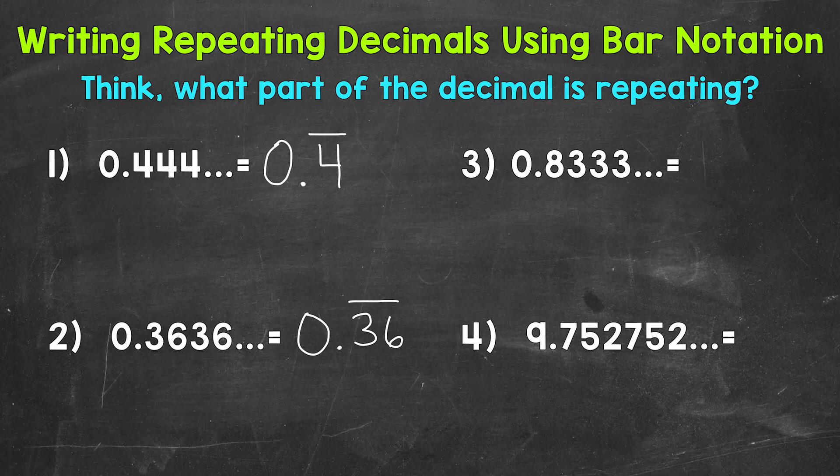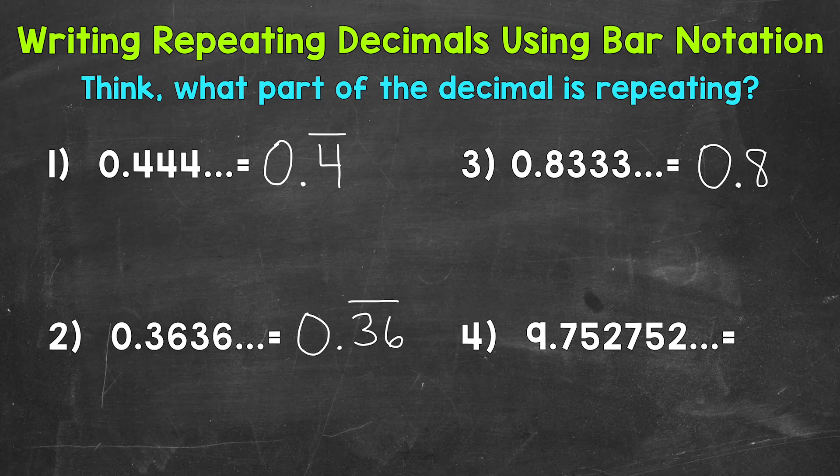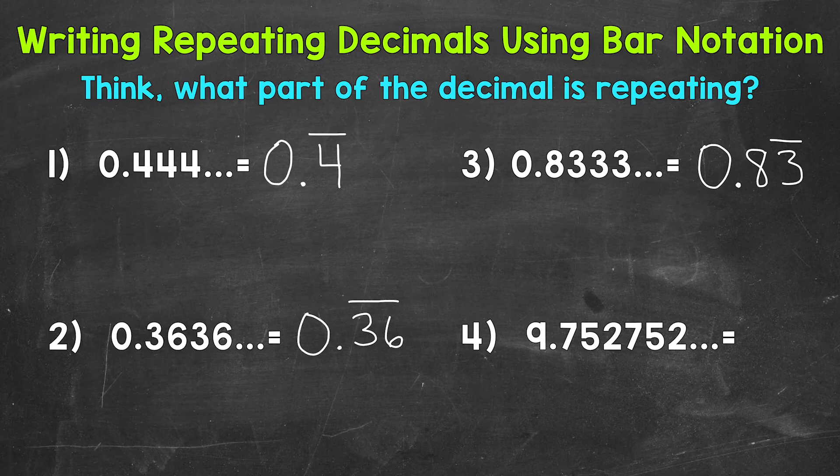On to number three, where we have 0.8333 with the 3 repeating, not the 8. We would write this as 0, decimal, 8, 3, and the bar goes above the 3 only, because that's the digit that repeats.